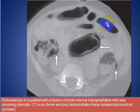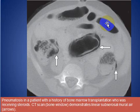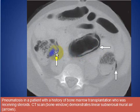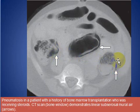Here is a patient with pneumatosis after bone marrow transplantation, with the patient receiving steroids. We see the pneumatosis as subserosal intramural air, also here and here.